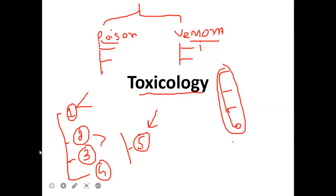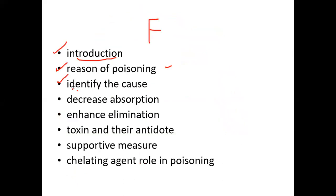The five categories of toxins are: cholinergic agents, anticholinergic agents, sympathomimetics, sedatives and hypnotics, and opioid agents which cause CNS depression and may cause death if we cannot reverse the condition. For opioids we use antidotes like naloxone. Now let's proceed toward the definition section.